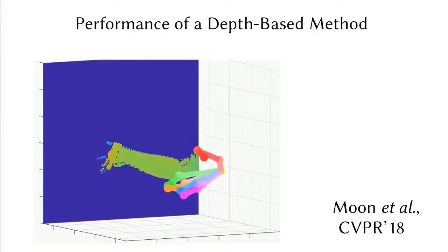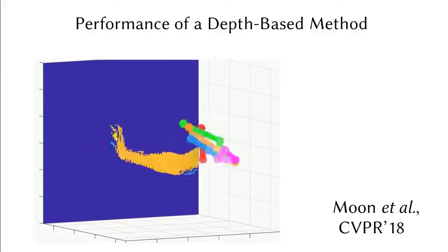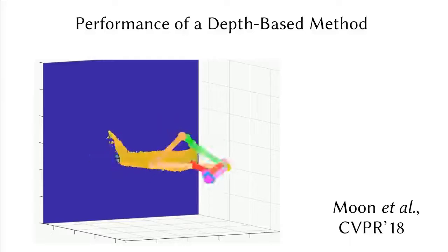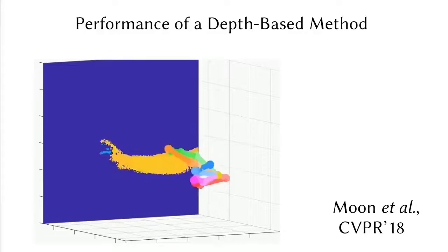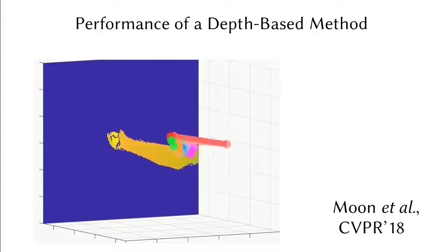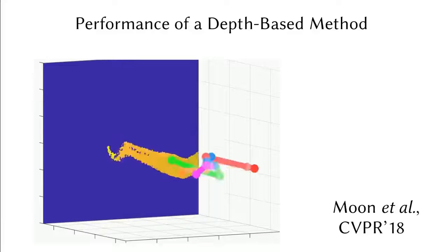Most commodity depth cameras produce corrupted depth maps for fast motions, and similar to the RGB cases, existing depth-based methods cannot handle these corruptions.